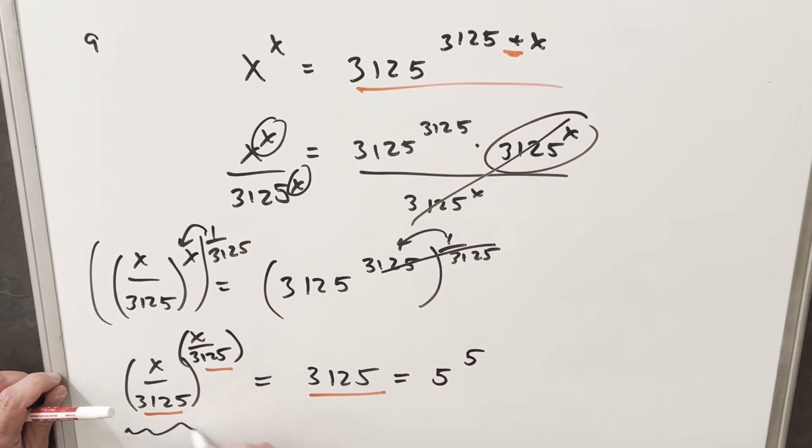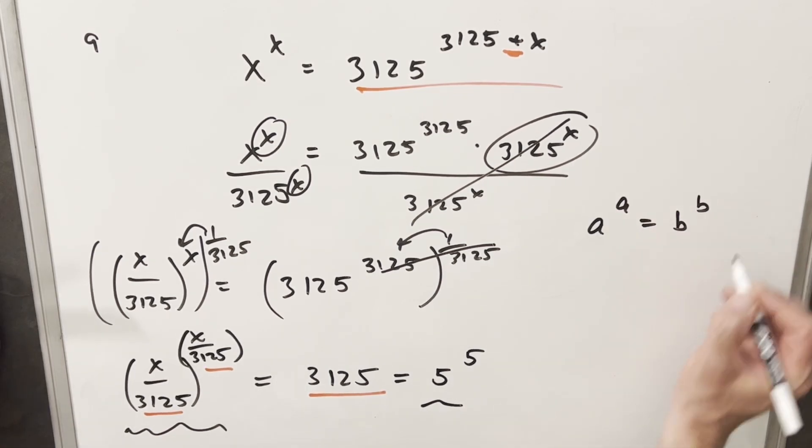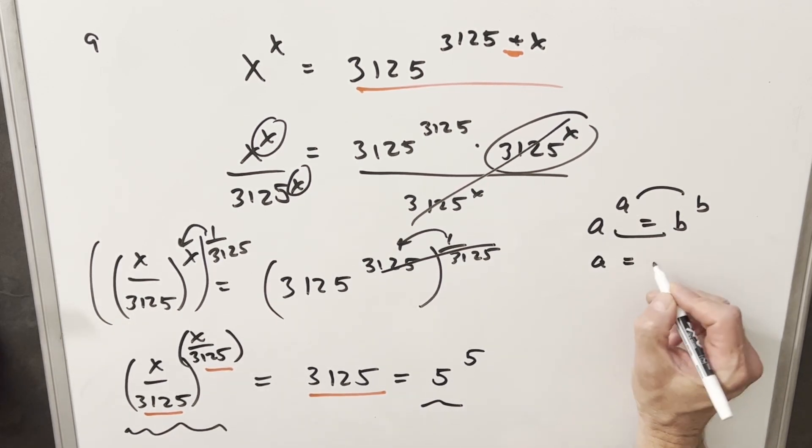So equating this piece over here to this piece. So now we have our equation in this form, a to the a equals b to the b. And that's going to allow us to equate exponent to exponent or base to base and find that a equals b.